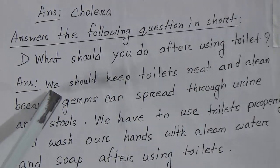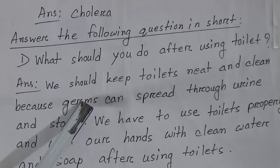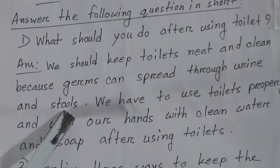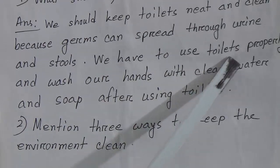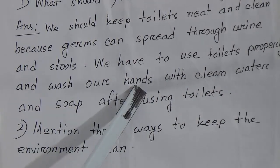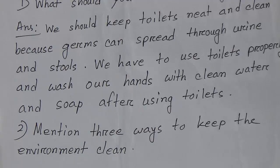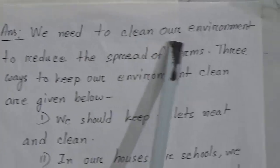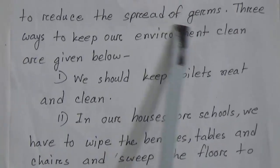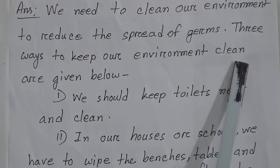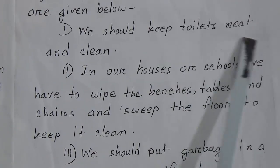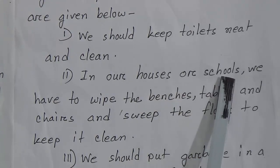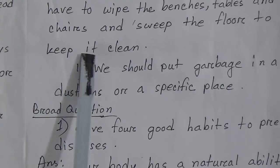Now answer the following questions in short. Number one: what should you do after using the toilet? We should keep toilets neat and clean because germs can spread through urine and stools. We have to use toilets properly and wash our hands with clean water and soap after using the toilet. Number two: mention three ways to keep the environment clean. We need to clean our environment to reduce the spread of germs. One: keep toilets neat and clean. Two: wipe benches, tables, and chairs, and sweep the floor. Three: put garbage in a dustbin or specific place.